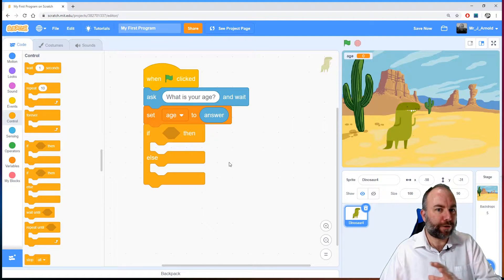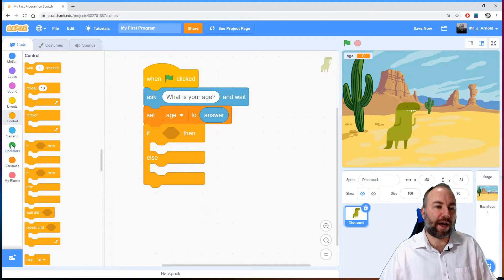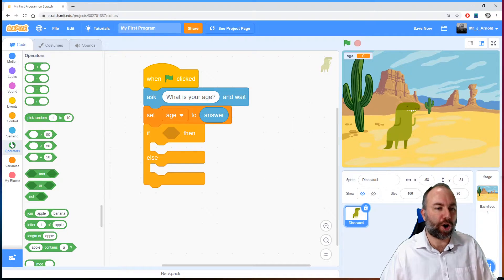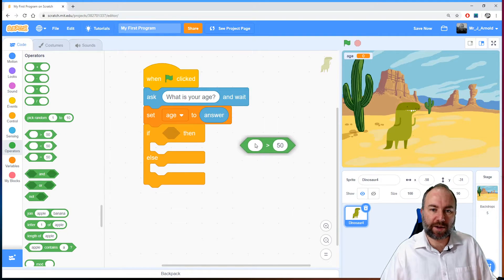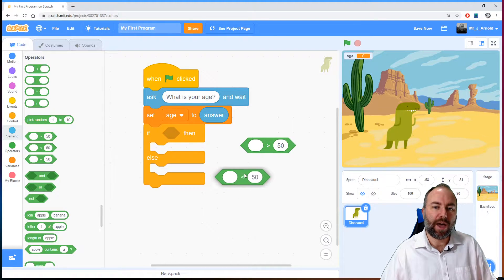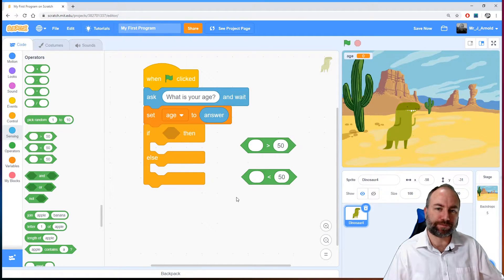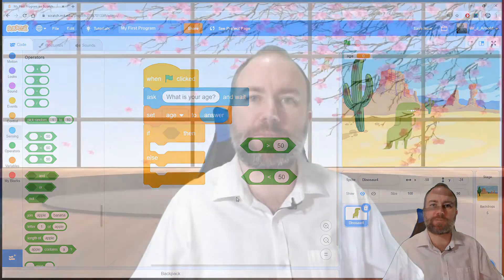So if the age is more than something. Now the more than and less than operators are in our green operators category and here they are. It's these two symbols here. Now a lot of people do struggle to remember which one of these is which.